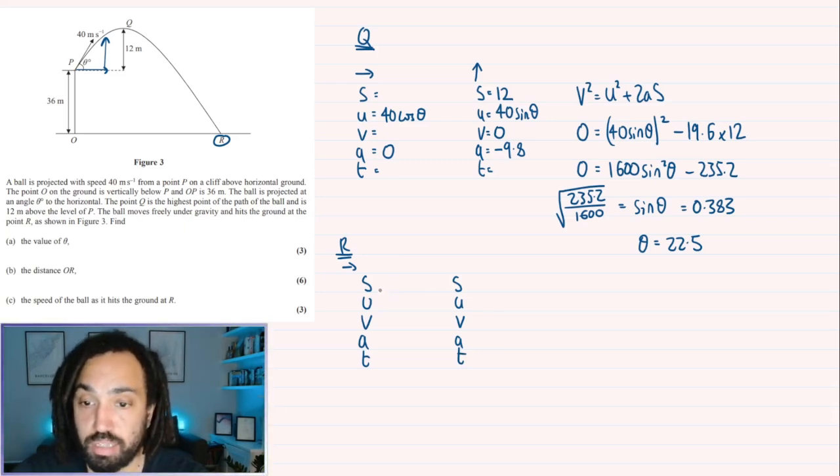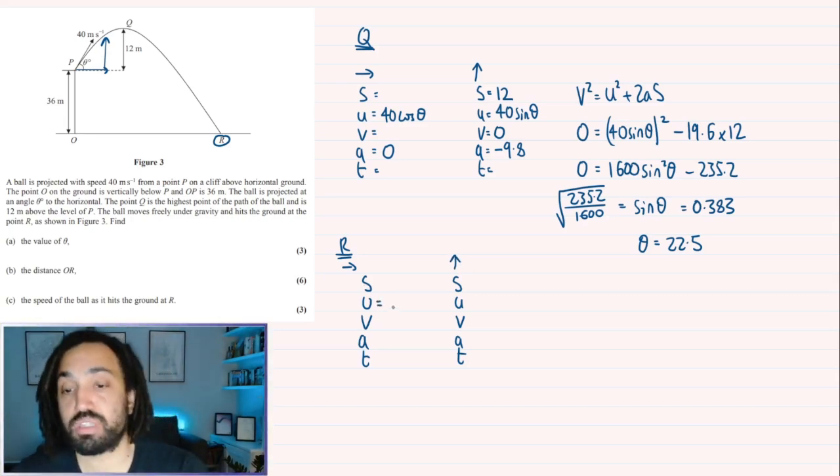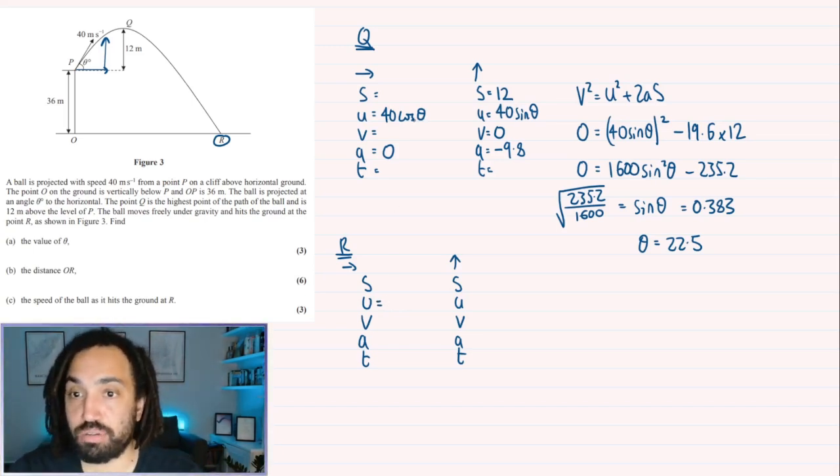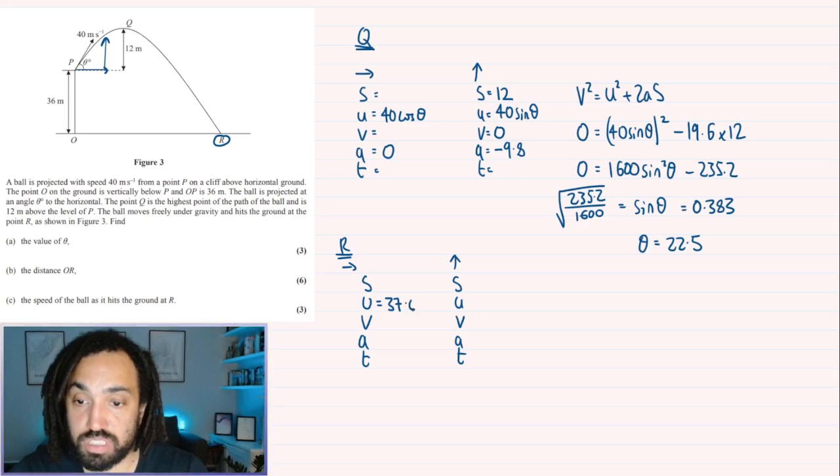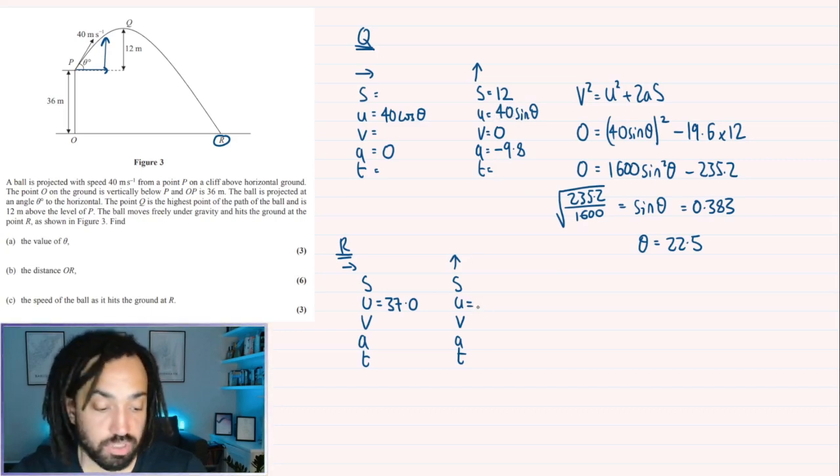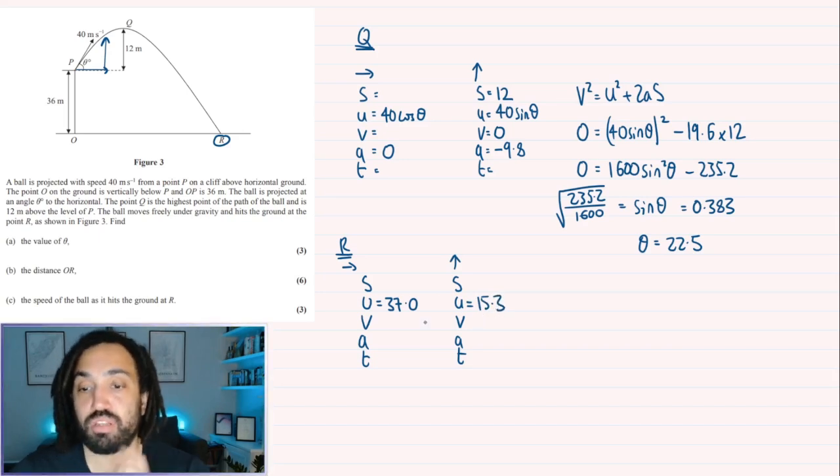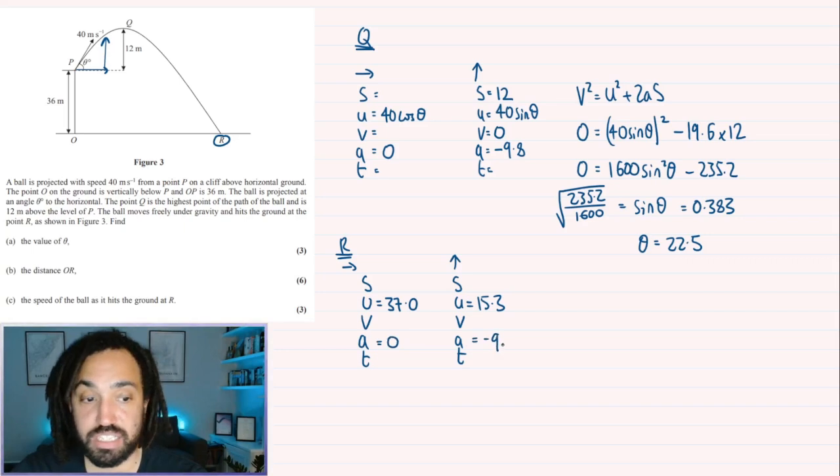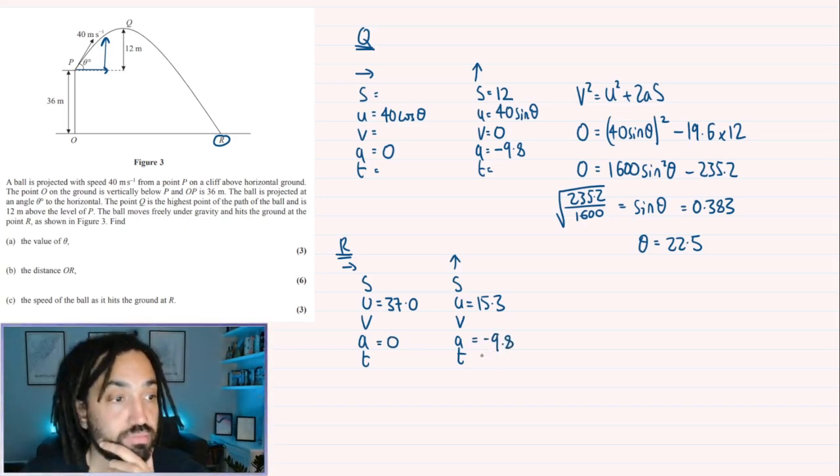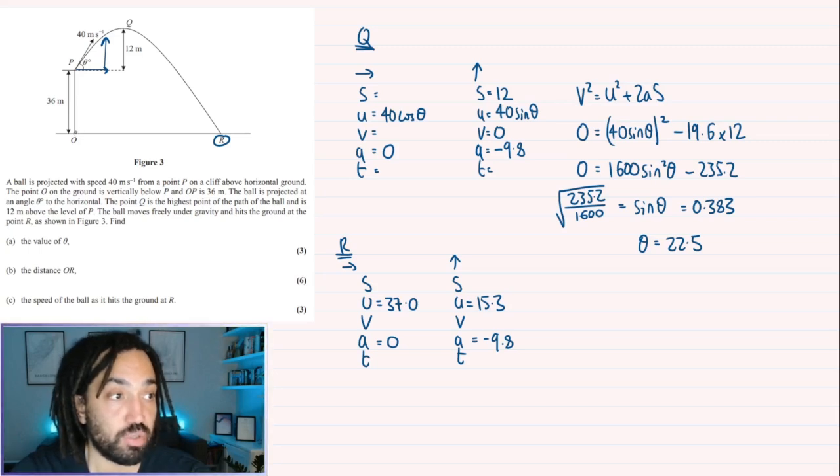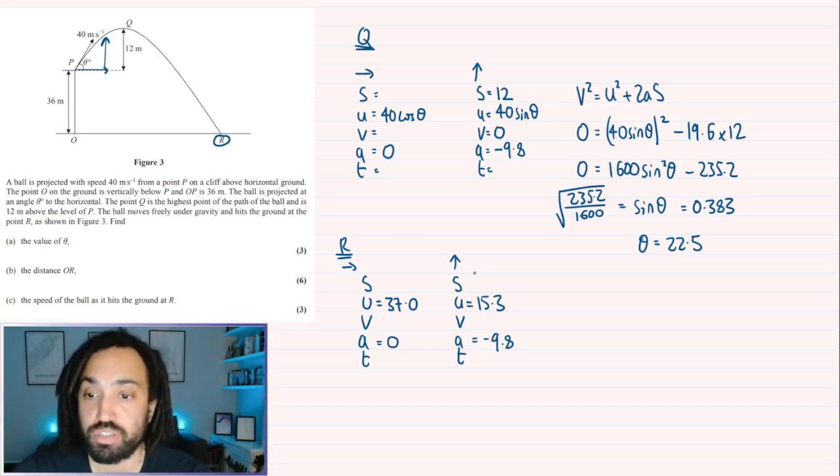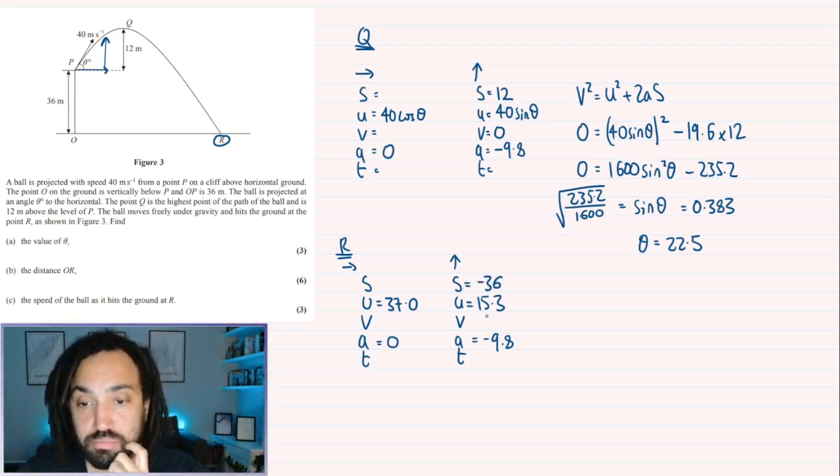For U, and this is for the vertical of course, so let's look at U for the horizontal. Well, we know the theta value now, so we can sub that in to 40 cos theta and we get a horizontal velocity of 37.0. And we can also sub it in for the vertical velocity and that gives me 15.3. Once again, the acceleration is 0 in the horizontal and it is negative 9.8 in the vertical. Now, we know that in the vertical it has travelled down 36 metres in order to be in line with the floor. So therefore, the vertical is minus 36.